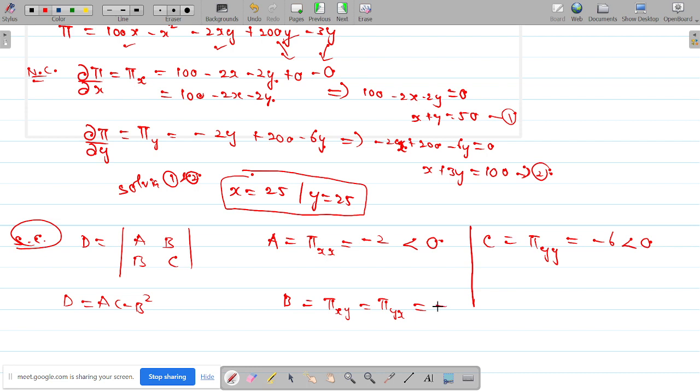In this case it happens to be negative here. But anyway, we substitute ac minus b². A is minus 2, c is minus 6, which is 12. This is positive. Minus b² is 4, minus 4. It happens to be 8 greater than 0. D is greater than 0. Ultimately I have this result over here. D greater than 0 where a and c is less than 0, obviously it is a maximization point.